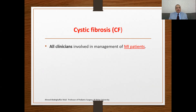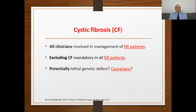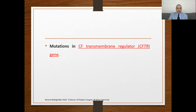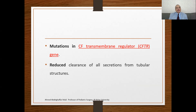Cystic fibrosis: all clinicians involved in the management of meconium ileus patients must understand what cystic fibrosis is, and excluding cystic fibrosis is mandatory in all patients with meconium ileus. Cystic fibrosis is a potentially lethal genetic defect, mainly affecting Caucasians. It is an autosomal recessive disease. In cystic fibrosis, there is a mutation in what is called the cystic fibrosis transmembrane regulator gene — the CFTR gene — and as a result of this mutation, there is decreased or impaired clearance of all secretions all over the body from all tubular structures.